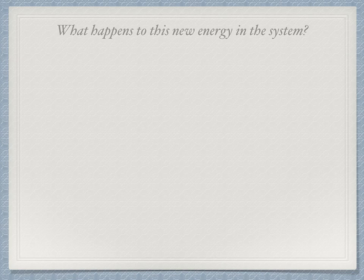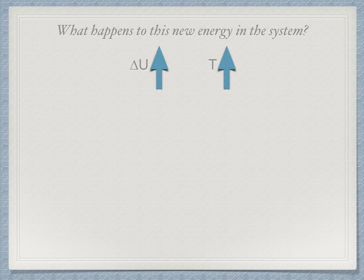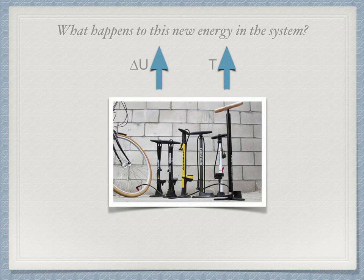You might also ask: what happens to this energy when it goes into the system? When you transfer energy, whether via heat or work, into or out of a system, one obvious effect is to change the system's temperature. A rise in internal energy would produce a rise in temperature. Have you ever used a bicycle pump? You might notice that it gets warm when you use it. When you push down on it, you are doing work, increasing the internal energy of the gas and increasing the temperature. Since the walls of the pump are not well insulated, some energy also leaves in the form of heat, which is what you are feeling.